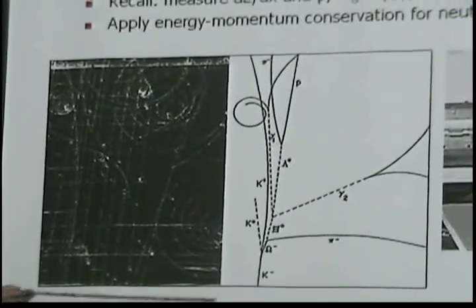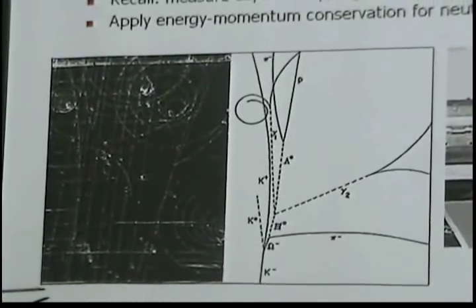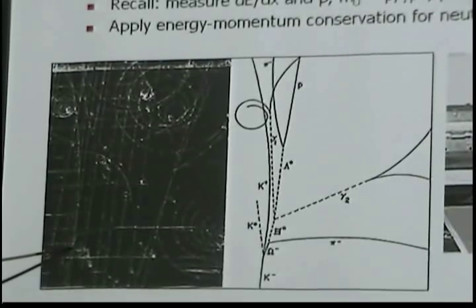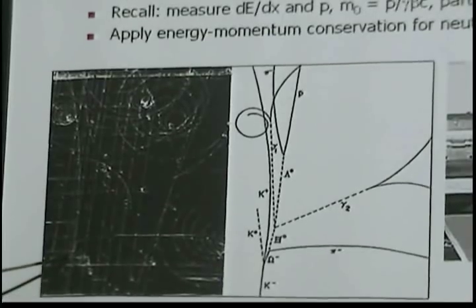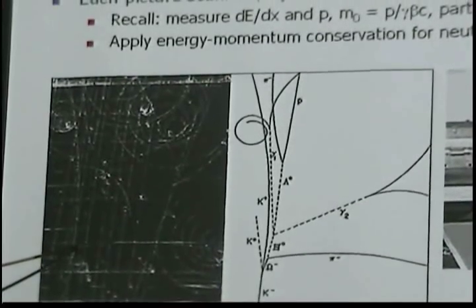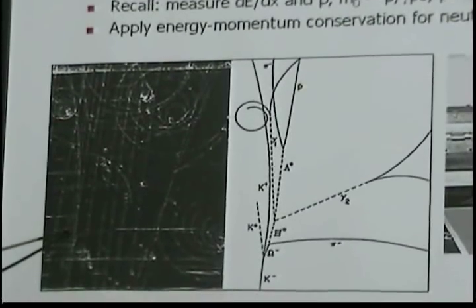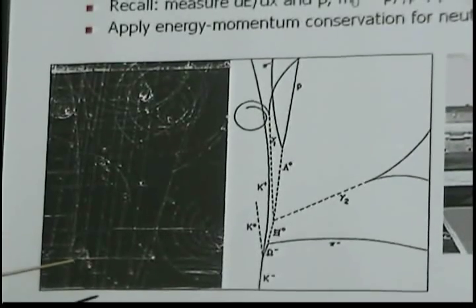And what you see is the following. In this case, they had a kaon beam. So kaons were coming in, that's right here. You see the kaon coming in. Here is the production of the omega minus. It lived for a while, then you see a kink. You see a particle going off this way, and nothing. And nothing means that it was a neutral particle, it wasn't charged.